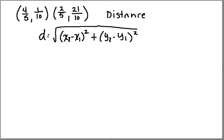Pamela, we're going to do the distance one first. I didn't quite get yours copied down correctly. I'll do this one, and if you still have questions I can work another one. Alright, so we're given two points: four-fifths, one-tenth and two-fifths, twenty-one-tenths, and we want to know the distance. I've already written the distance formula here.